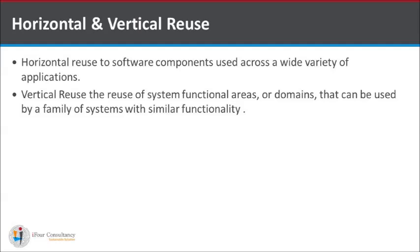Horizontal reuse is the reuse of software components used across a wide variety of applications, whereas vertical reuse is the reuse of system functional areas or domains that can be used by a family of systems with similar functionality.